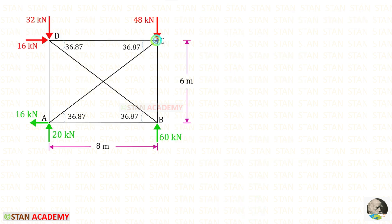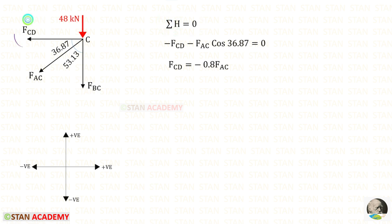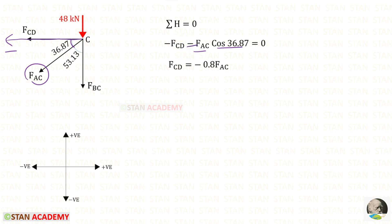Now let us take joint C. FBC has already been found, and we only need to find FCD. Applying horizontal equilibrium: FCD acts leftward (negative), and FAC resolved horizontally requires multiplying by cos 36.87 (negative, leftward). For FCD, we will get the corresponding expression in terms of FAC.